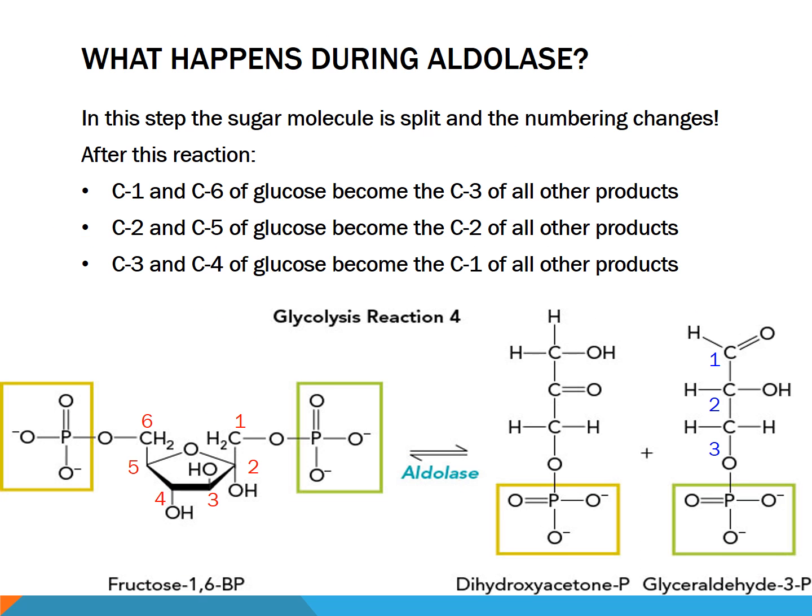Know that after aldolase, carbon one and carbon six of glucose will become carbon three of all the other products in the payoff phase; carbon two and carbon five of glucose will become carbon two of all the other products in the payoff phase; and carbon three and carbon four of glucose, which is where it's going to split between, will become carbon one of all the other products.